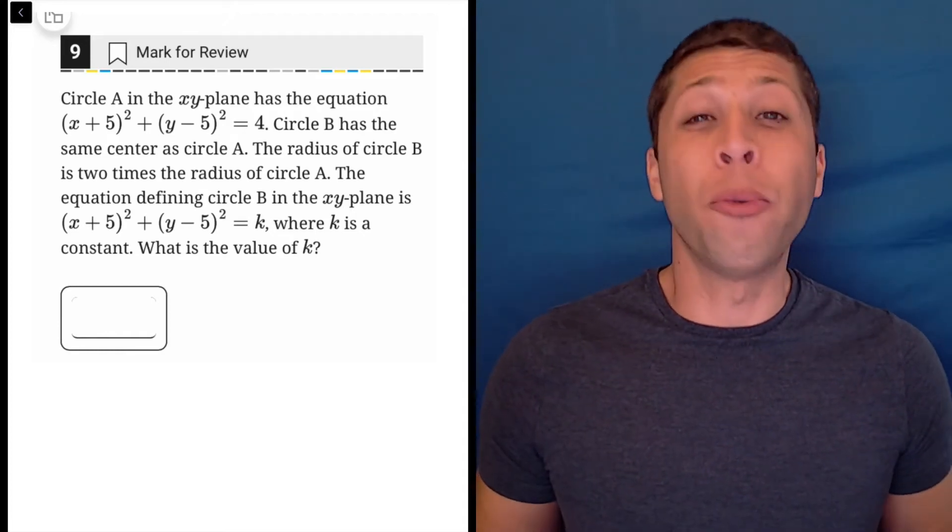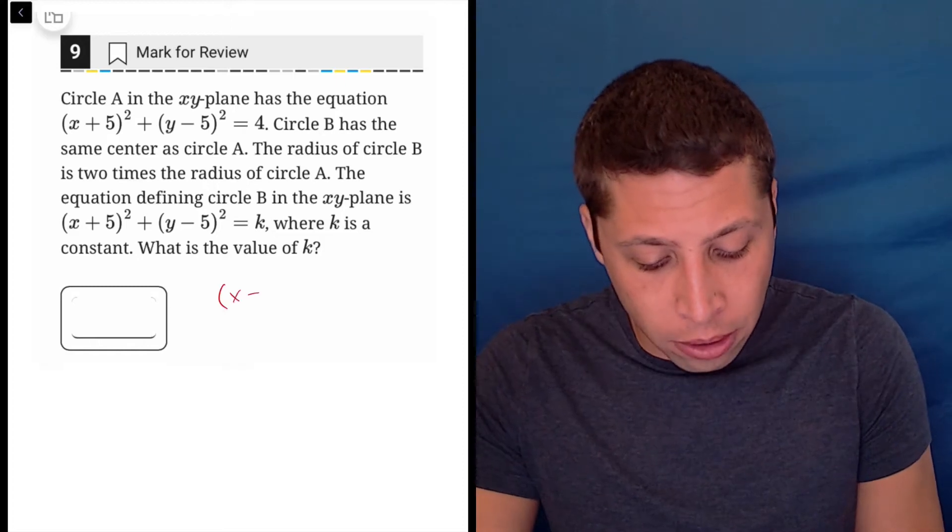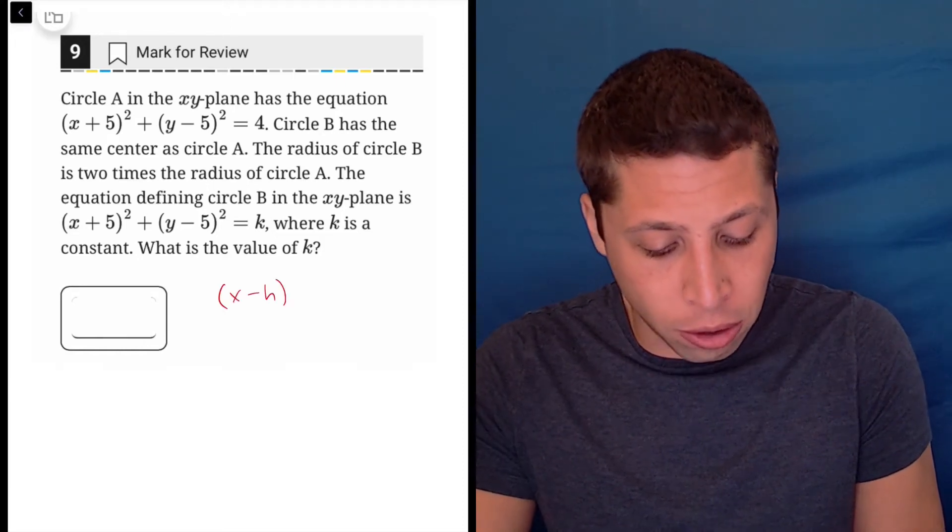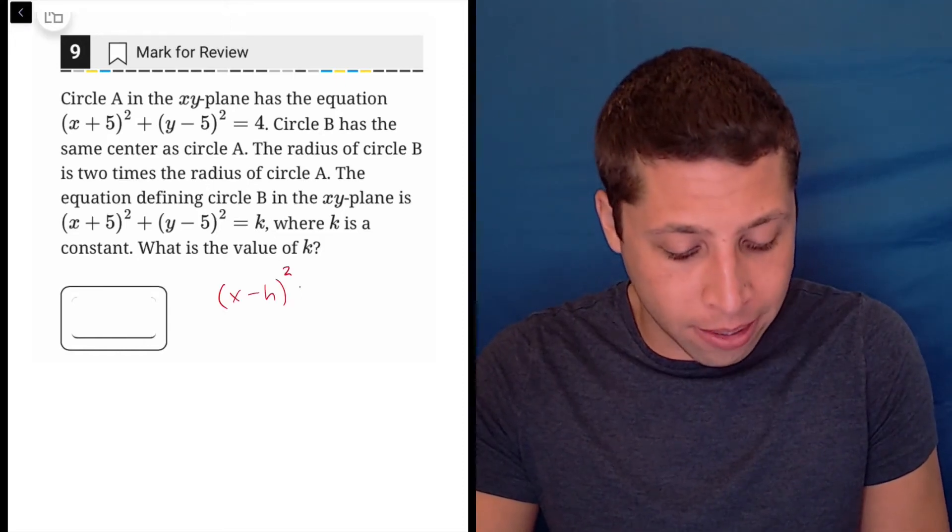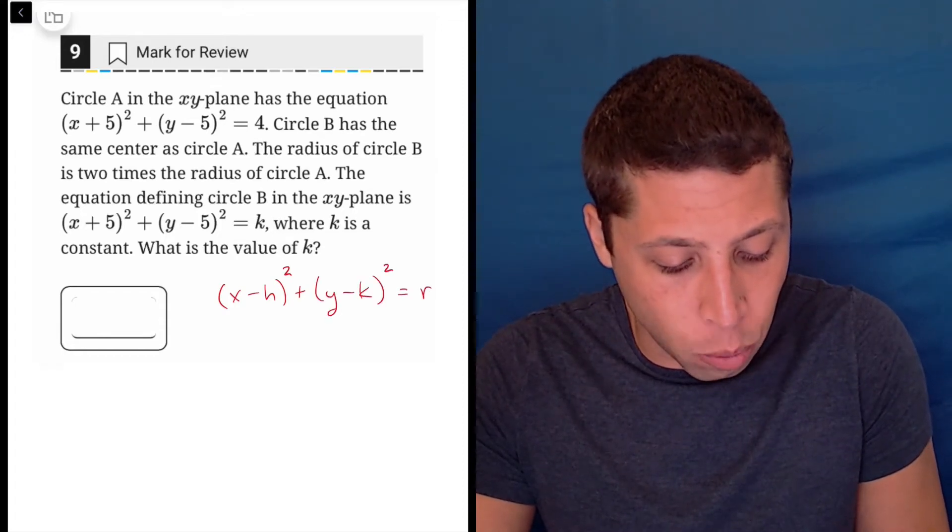This question is basically just, do you know the circle equation? So to start off, the general version of the circle equation is usually written as x minus h squared plus y minus k squared equals r squared.